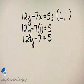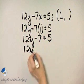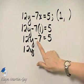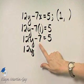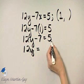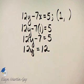Let's add 7 to both sides. So I have 12y. If I add 7 to the left side, I have minus 7 plus 7, which is 0, so I'll just have 12y. If I add 7 to the right side, I have 5 plus 7, or 12.